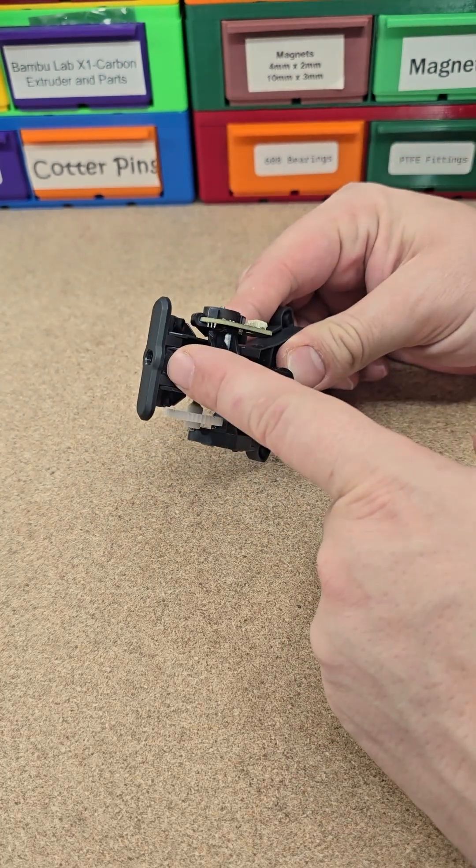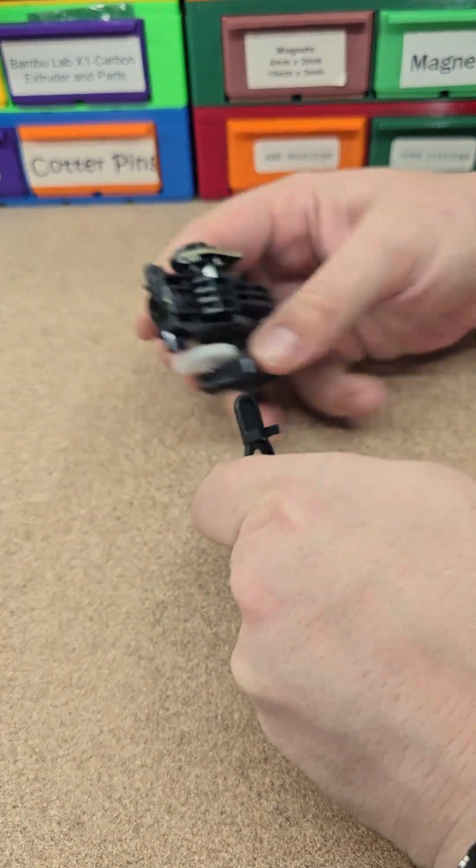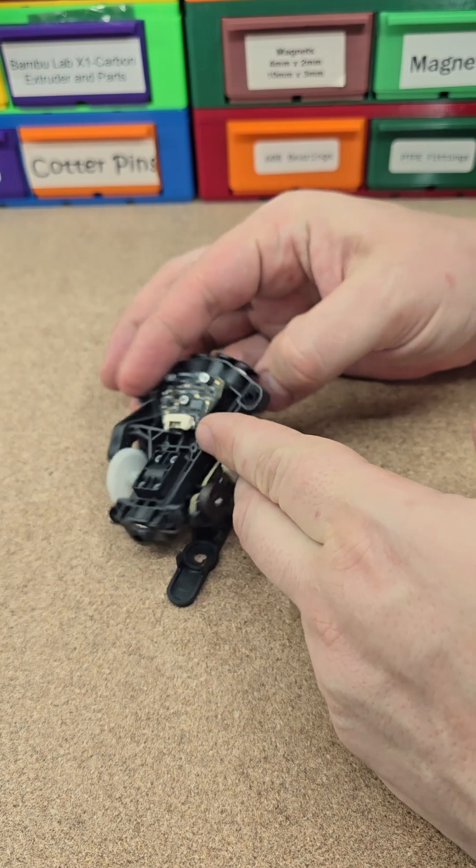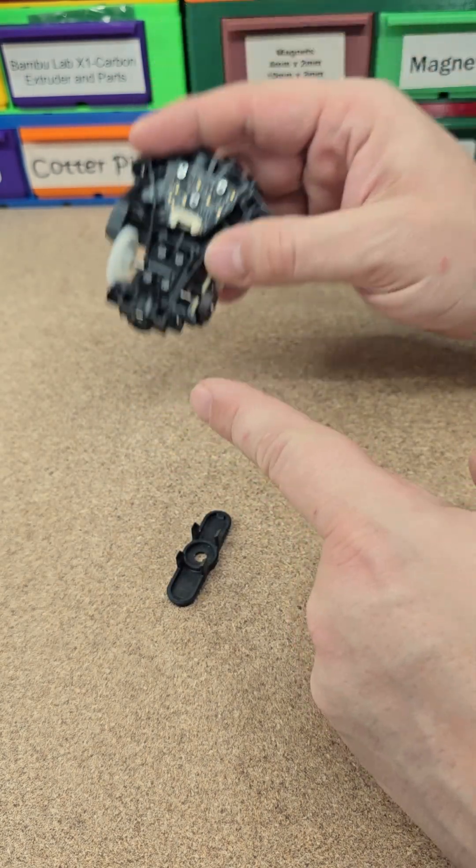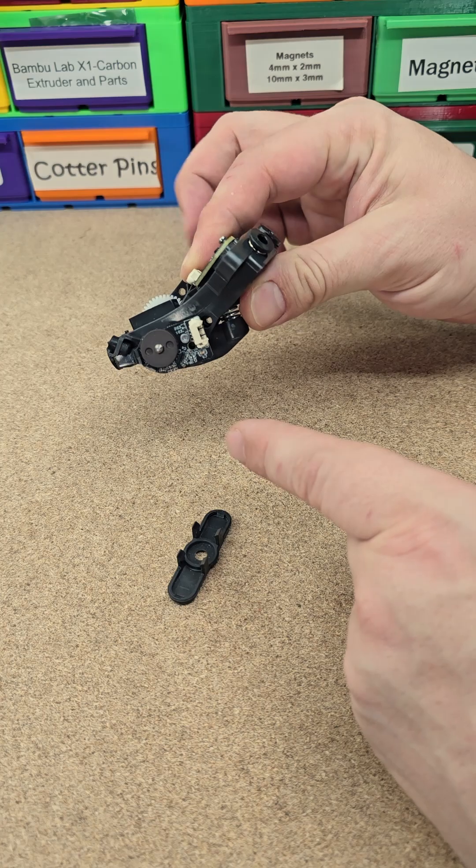The other night I had the PTFE fitting in my AMS hub that comes out the back of the AMS fail when trying to do a print. There's an easy fix to that instead of buying a whole new AMS hub.